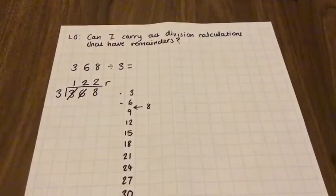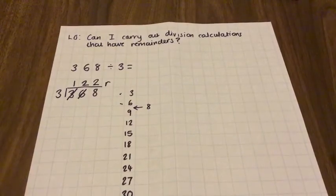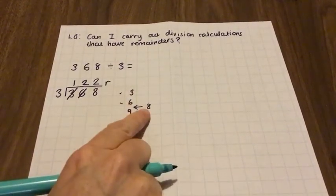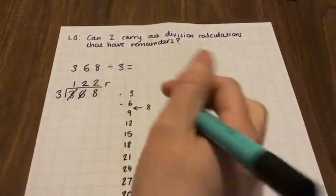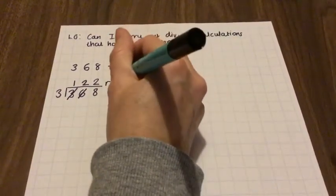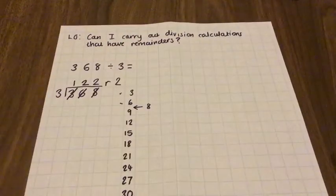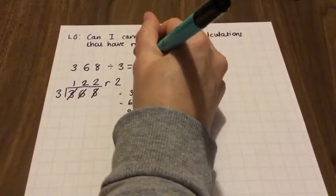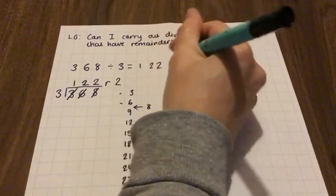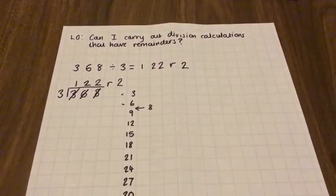We're going to show that with a letter R like that. To work out the remainder, we just need to find out the difference between 8 and 6. The difference between 8 and 6, 8 subtract 6 is 2. That means that our remainder is 2. Our answer is 122 with a remainder of 2.